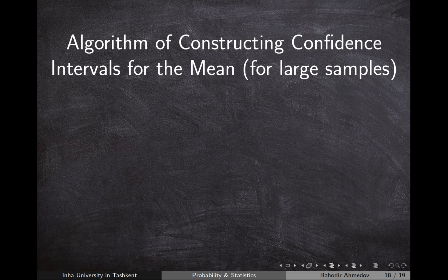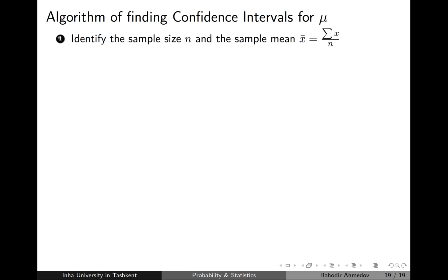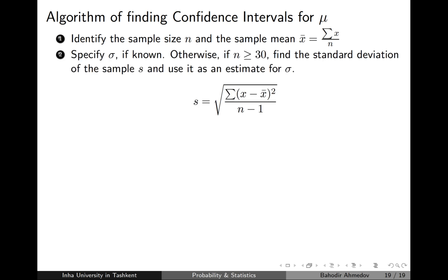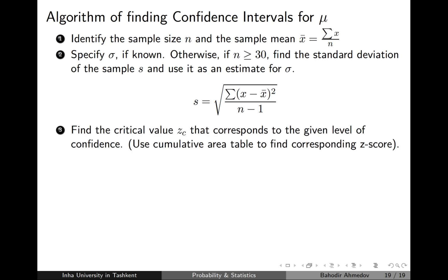Let's list the algorithm for constructing the confidence interval for the population mean using large samples. First, identify the sample size. Second, calculate the sample mean by summing all entries and dividing by n. Third, if the population standard deviation is known use it; otherwise calculate the sample standard deviation by subtracting the mean from each entry, squaring the differences, summing them, dividing by n minus 1, and taking the square root.